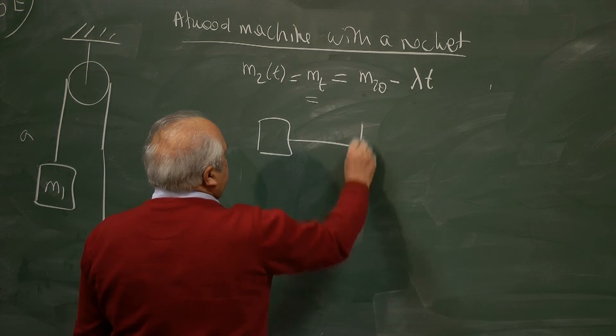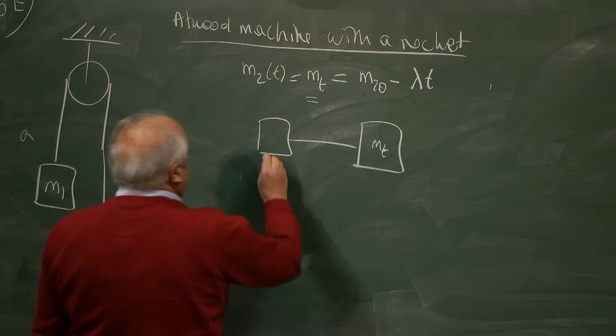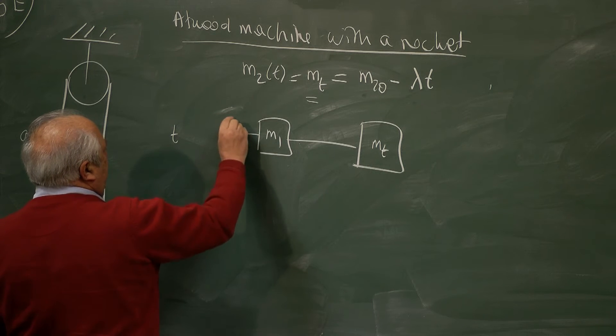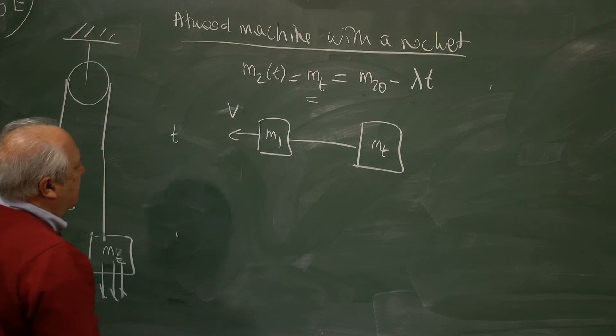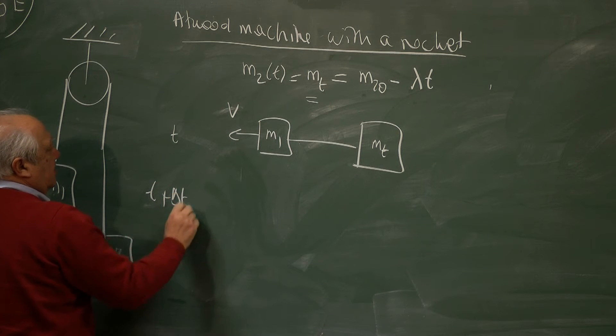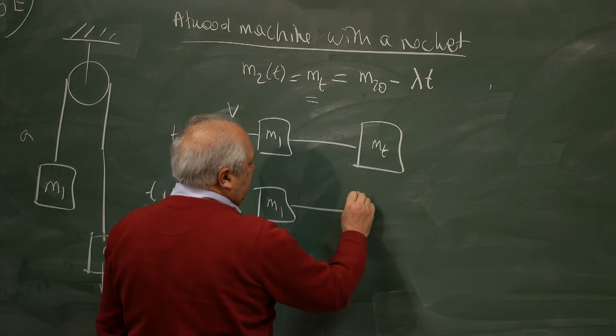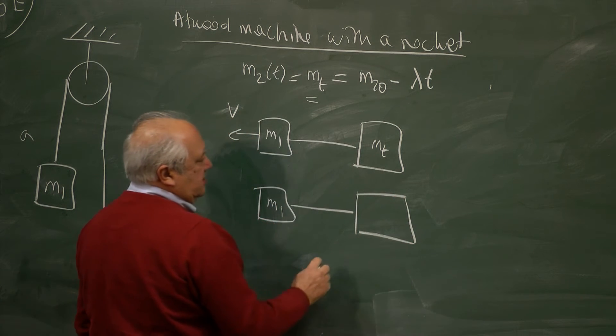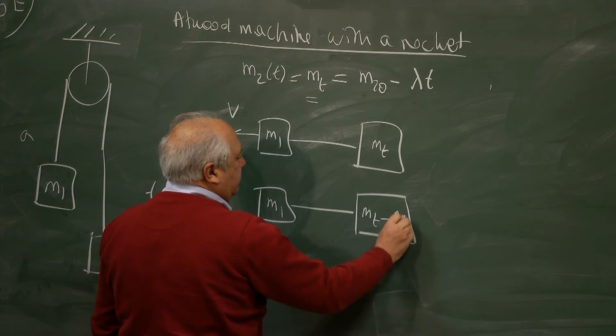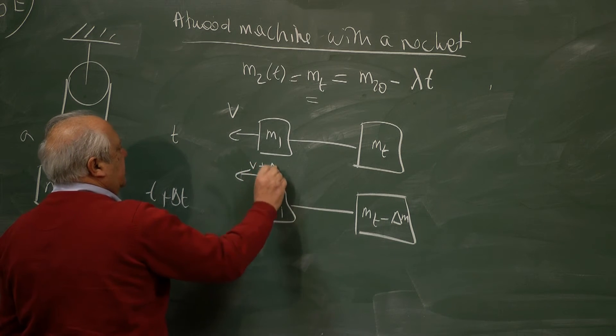So just like the previous case, this is MT. This is M1. And this is going with velocity V. At time T plus delta T, I have M1. Now I have here, it has lost mass delta M, MT minus delta M. And it is going with the speed V plus delta V.